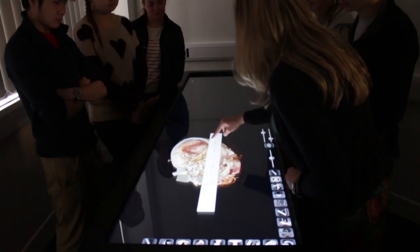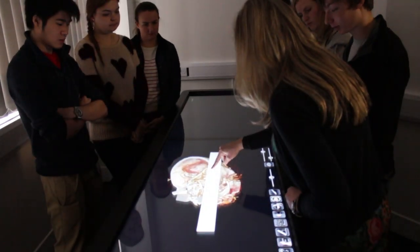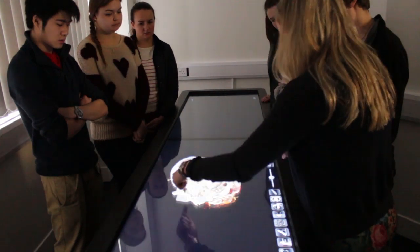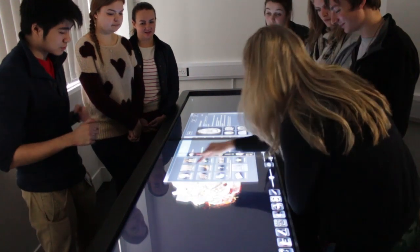The Anatomage Table is a really exciting and helpful way to supplement the teaching of anatomy here at the University of Birmingham. So in addition to cadaver specimens as well as the models and demonstrator teaching, it's another tool in which we can have the students experiencing different forms of human anatomy.